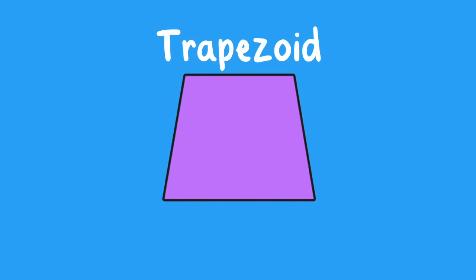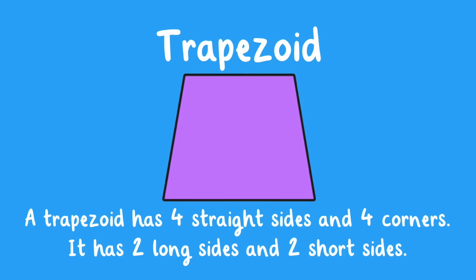Trapezoid. A trapezoid has four straight sides and four corners. It has two long sides and two short sides.